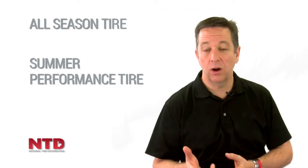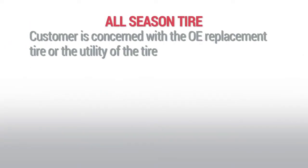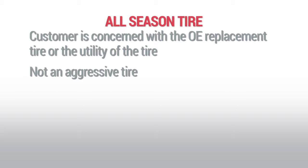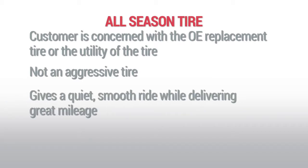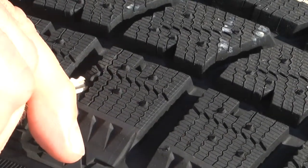90% of customers are interested in an all-season tire, a summer performance tire, or a winter tire. An all-season tire normally appeals to the customer concerned with OE replacement or strictly with the utility of the vehicle. It is not normally an aggressive tire — it has a closed shoulder and tends to give a quiet, smooth ride while delivering great mileage. The grooves are long and open, giving good wet-weather traction, and the tire does have some sipes. A sipe is a cut in the tread block that opens up while driving, giving a sharp biting edge to the tread.